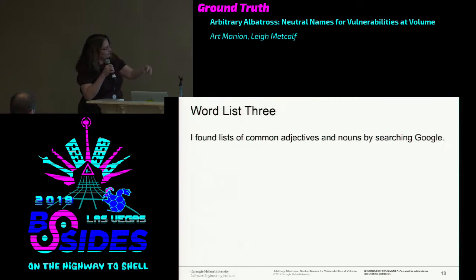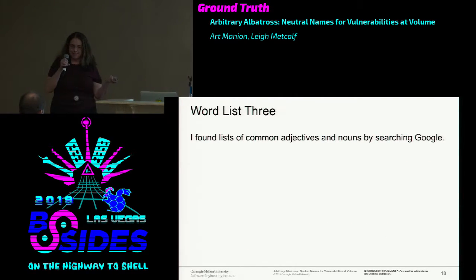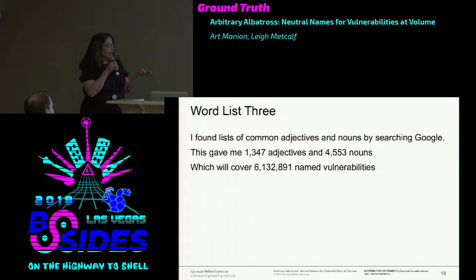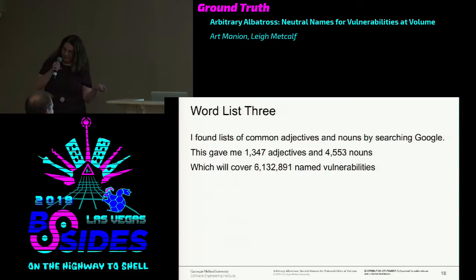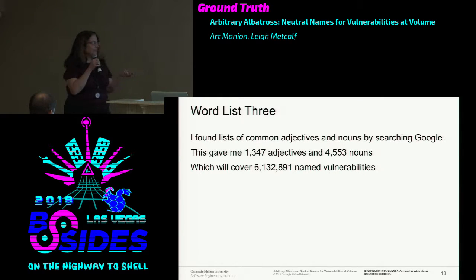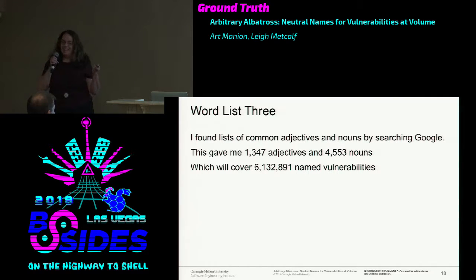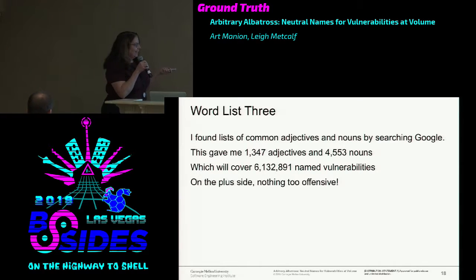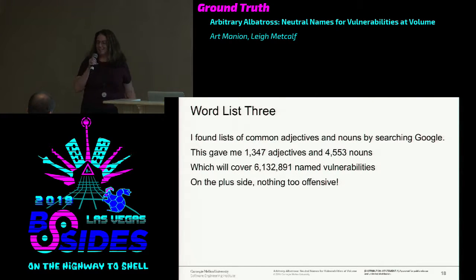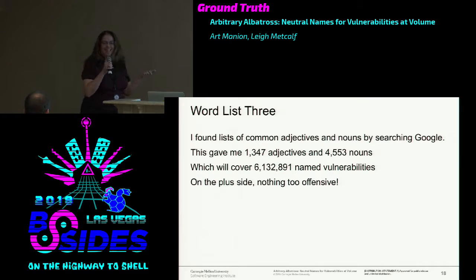I went to lists of common nouns and adjectives—I just searched Google and said give me a list of common nouns and adjectives. This time I got quite a few less: down to around six million combinations. We're not at that many CVEs yet. On the plus side, nothing too offensive—no more 'gelatinous whitehead.'